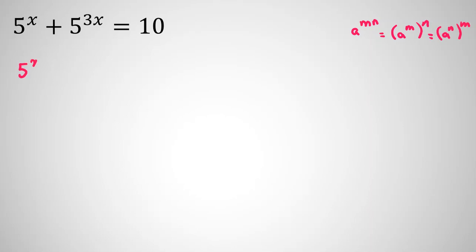Because I have 5 to the x, I try to extract 5 to the x from the second term. So by the rule, we can set it as 5 to the x plus 5 to the x cubed equals 10.